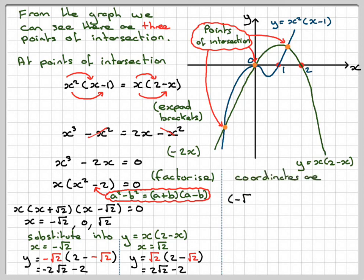And therefore we have the coordinates. The exact coordinates are going to be (-√2, -2√2 - 2), (0, 0), and (√2, 2√2 - 2). So this has been a video to show you how to sketch two graphs on the same axes and find their points of intersection by putting the two equations equal to each other. I thank you very much for watching, and I hope you have understood.